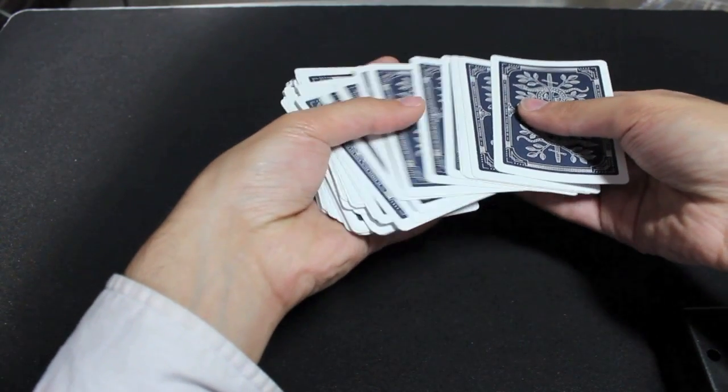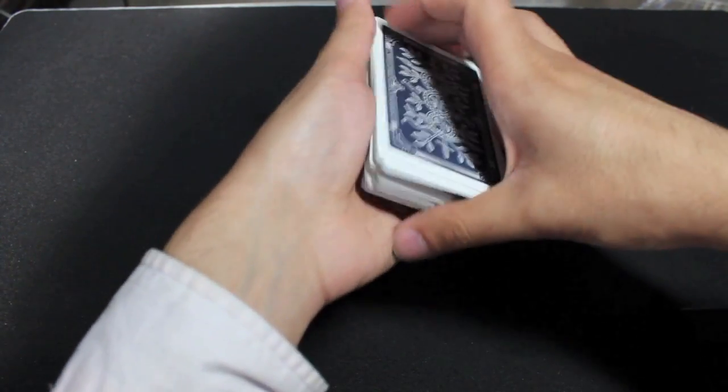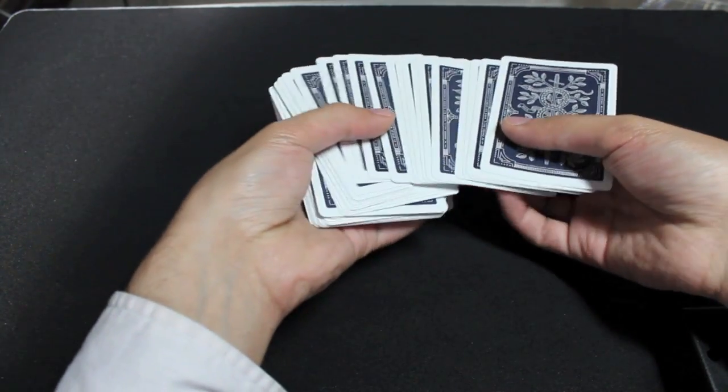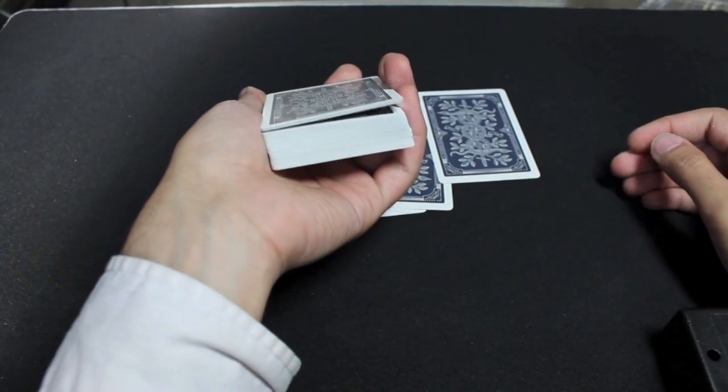So you're going to have four cards taken out. As you close the spread, what you want to do is get a little pinky break below the top four cards. So that's pretty easy to do. As you close up, you kind of just eyeball four cards from the top and you get your little break right there.